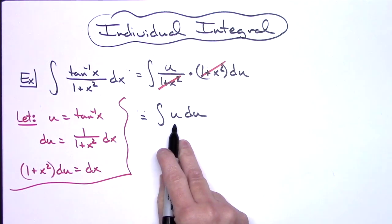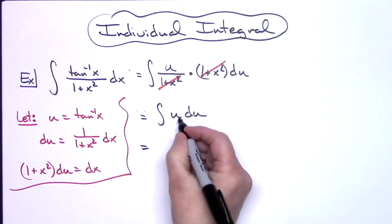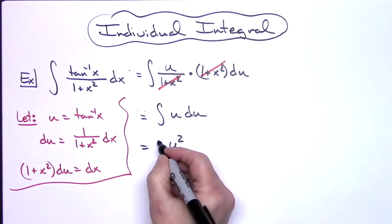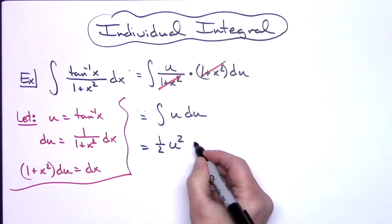Straightforward integration on this. I can just simply add 1 to that exponent. So I'll have u squared and I'll have that 1 half in front with a plus C.